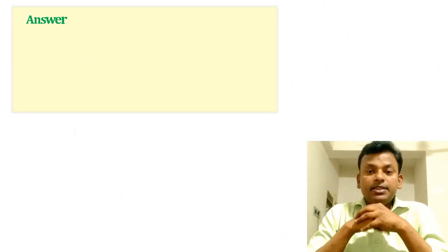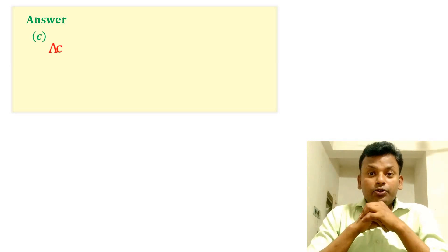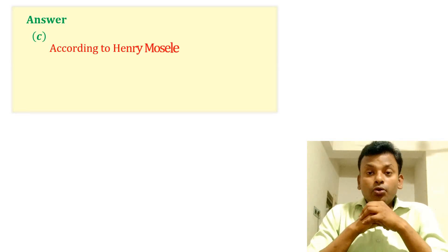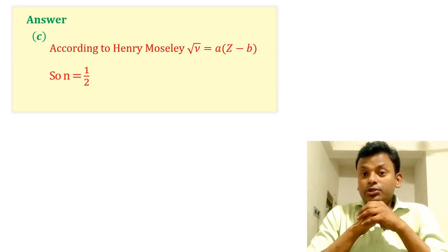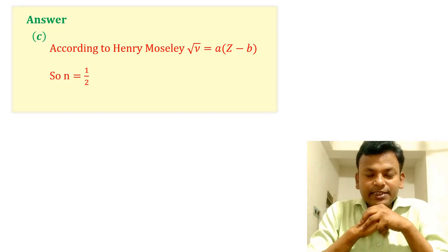Option C is the correct answer. According to Henry Moseley, root nu equals to A into Z minus B. So option C is correct answer.